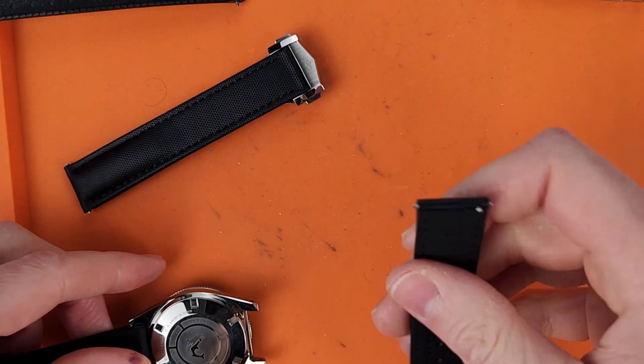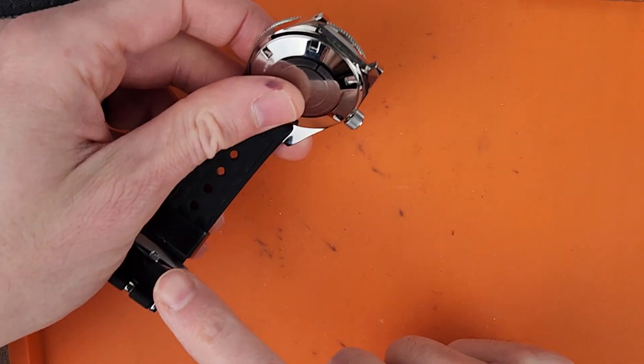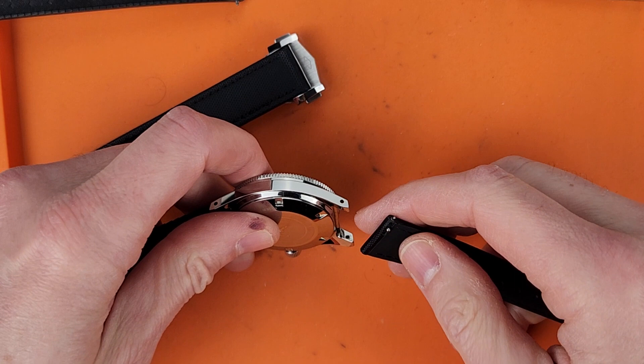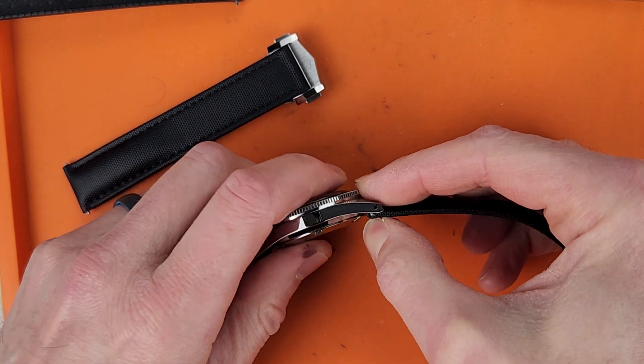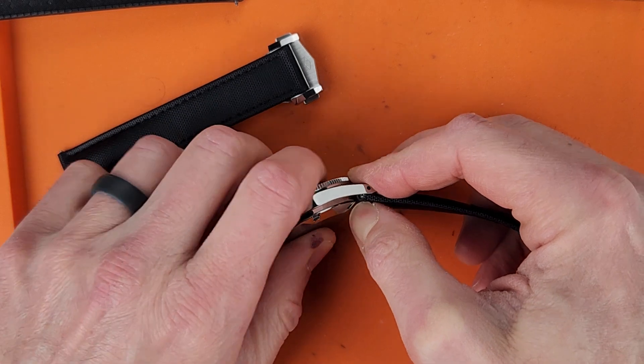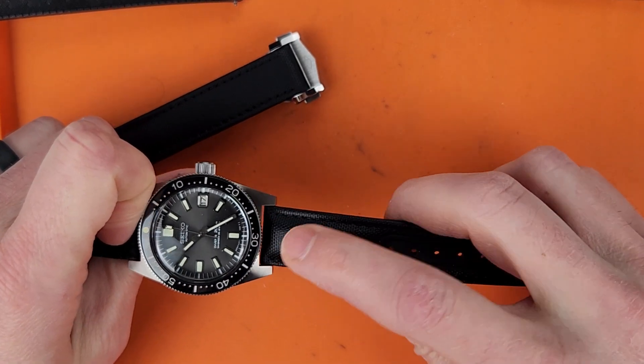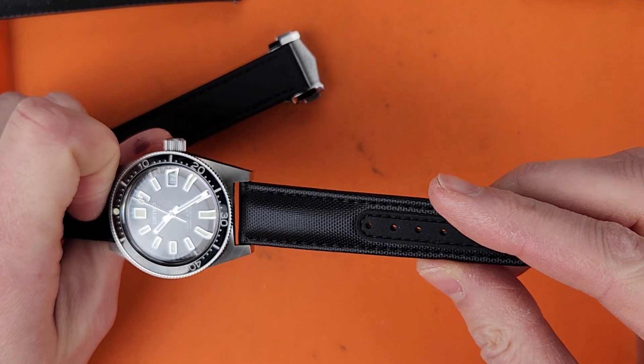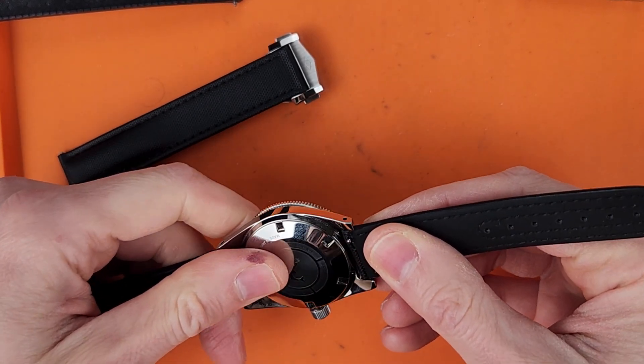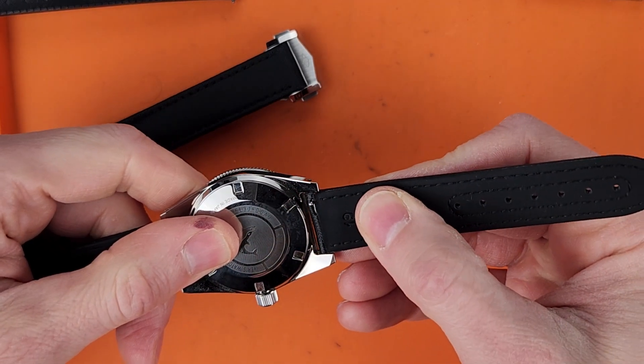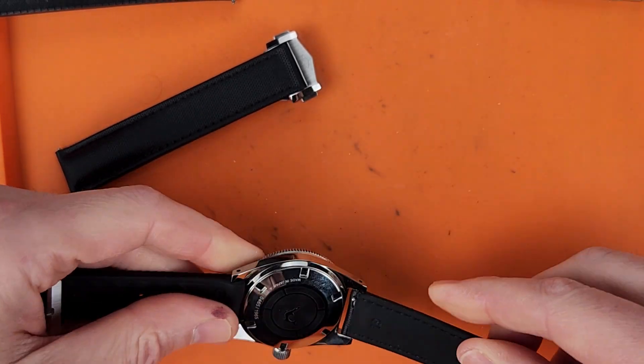I'm assuming with the deployant I'm still going to put the buckle part on this side. Hopefully this works on this watch. 19 millimeter lug width so I couldn't just throw another strap on there because I don't have any other 19 millimeter straps. We do have a little bit of play because I don't have the fat spring bars but it should be fine.